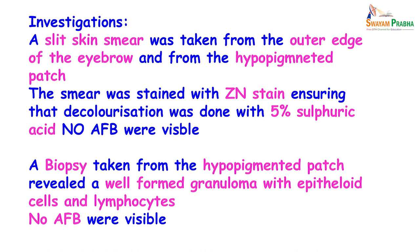How is a slit skin smear taken? You usually pinch the skin to reduce bleeding. After cleaning the site with spirit, you make a nick in the skin with a sharp scalpel, go a little deeper, and scrape the inside of the skin. The material obtained is spread on a slide, allowed to air dry, and then sent to the laboratory.